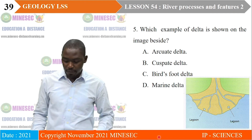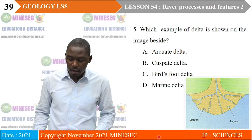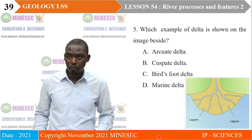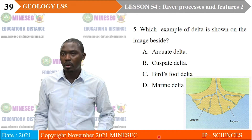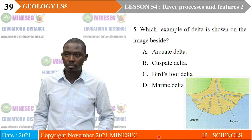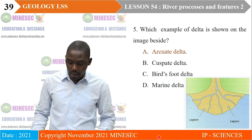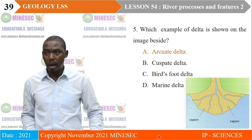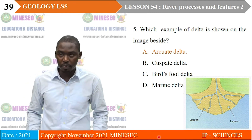Exercise five: Which example of delta is shown on the image beside? A. Arcuate delta, B. Cuspate delta, C. Bird's foot delta, D. Marine delta. Our correct answer is A — Arcuate delta. These are deltas that have a triangular shape.